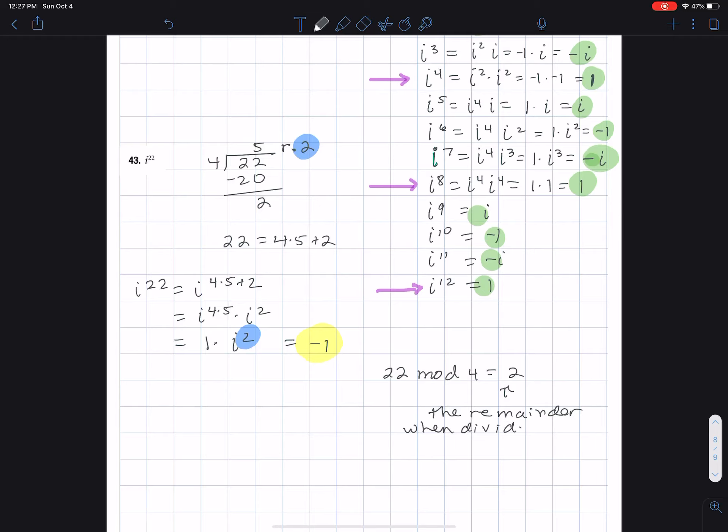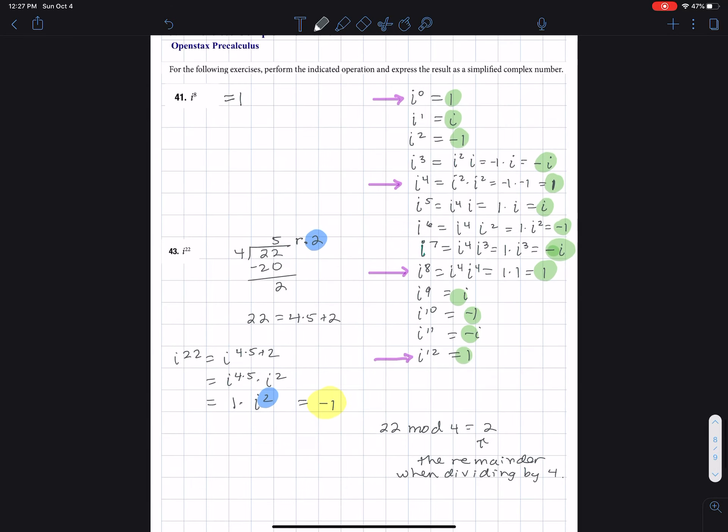When dividing by four, modulo, I mean it could be modulo five, modulo six, but for complex numbers, we do modulo four. We divide four into 22 and we get a remainder two. And the modulo works when you have integers.